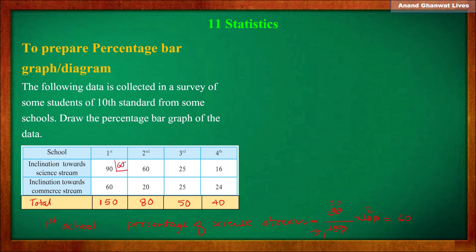Now second school: total number of students are 80, out of which 60 students are turned towards science stream. So 60/80 × 100: calculating — 4 twos are 8, simplifying gives 15 × 5 = 75. So 75% of students are turned towards science stream in the second school.